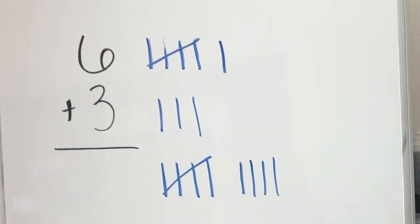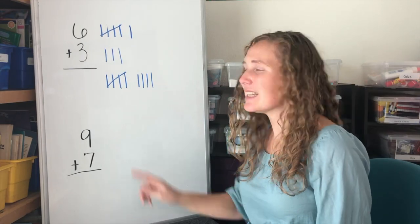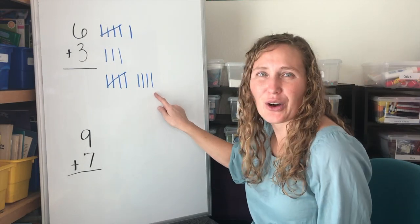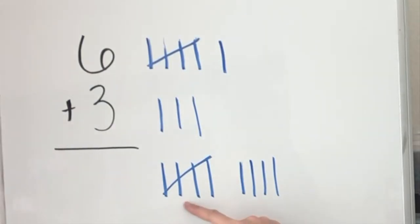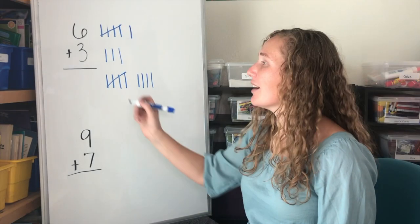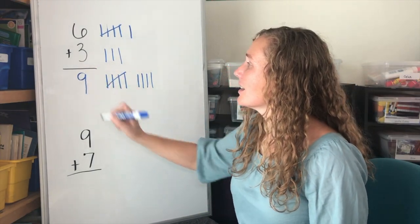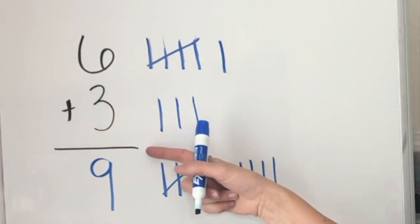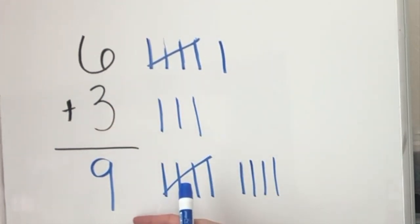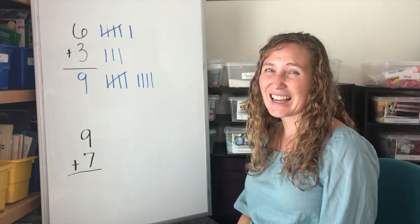Now how many tally marks do we have all together? Five, six, seven, eight, nine. We have nine. Six plus three equals nine. Are you ready to try it again?